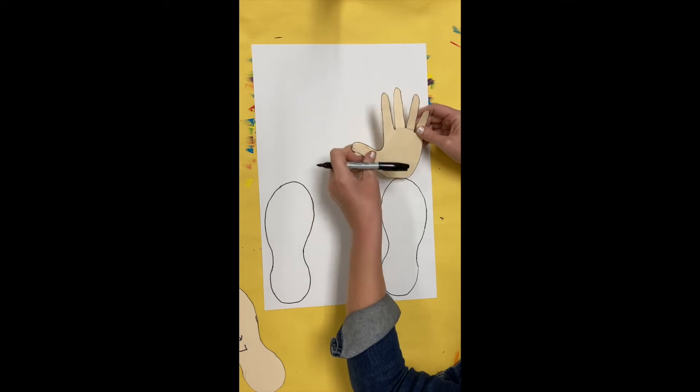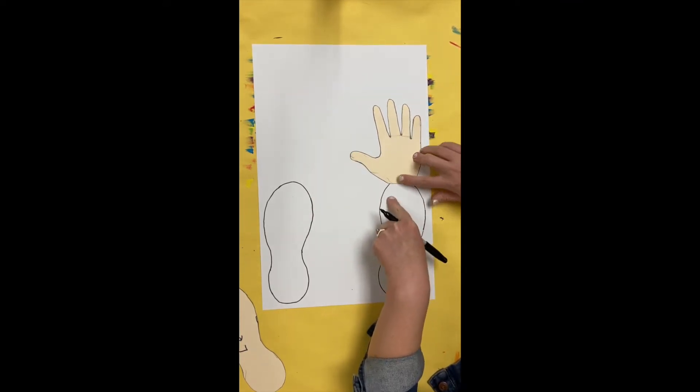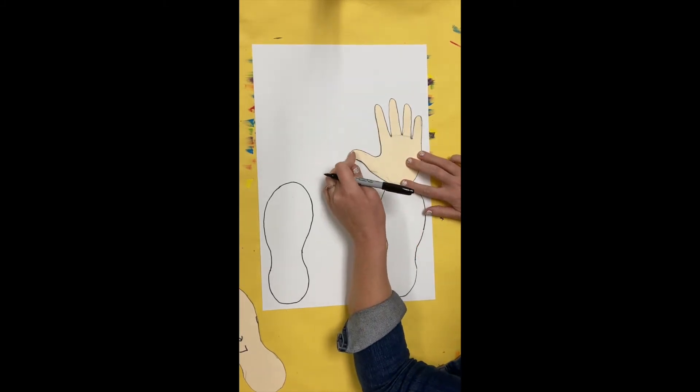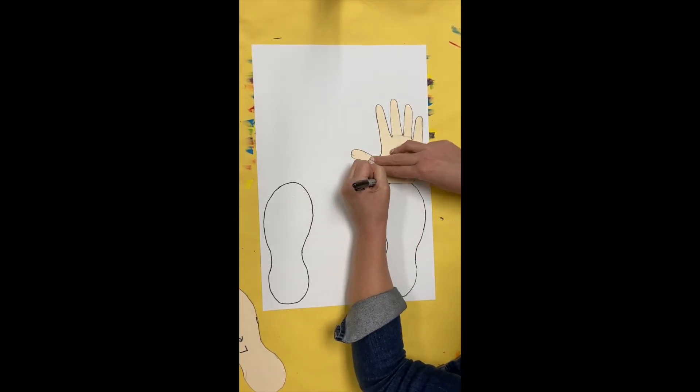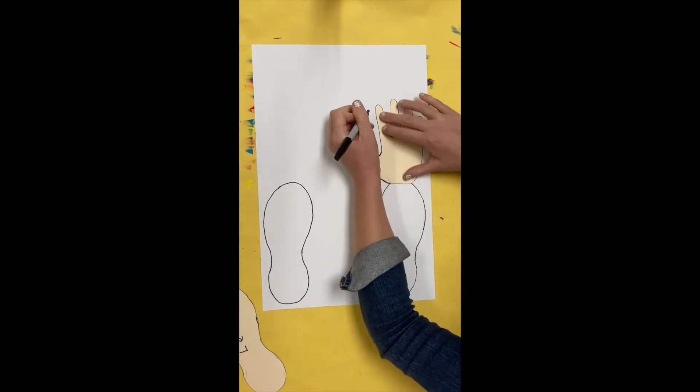When you trace the hand, make sure the thumb is pointing to the middle. I'm going to have it overlap the top of the shoe just a little bit. Your hands are slightly shorter than your feet, so they should be behind your shoe.